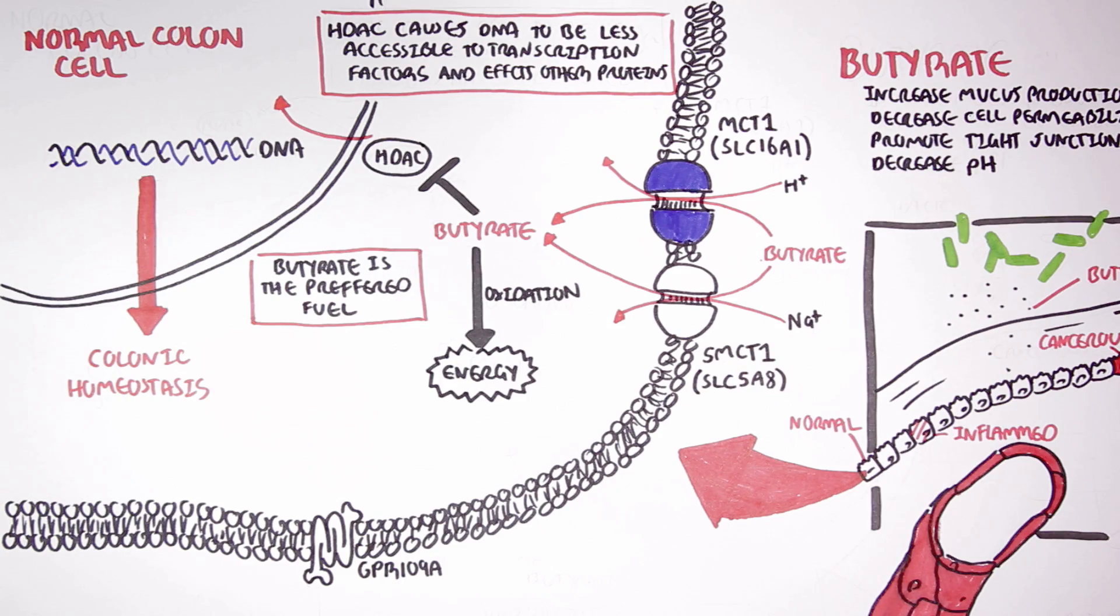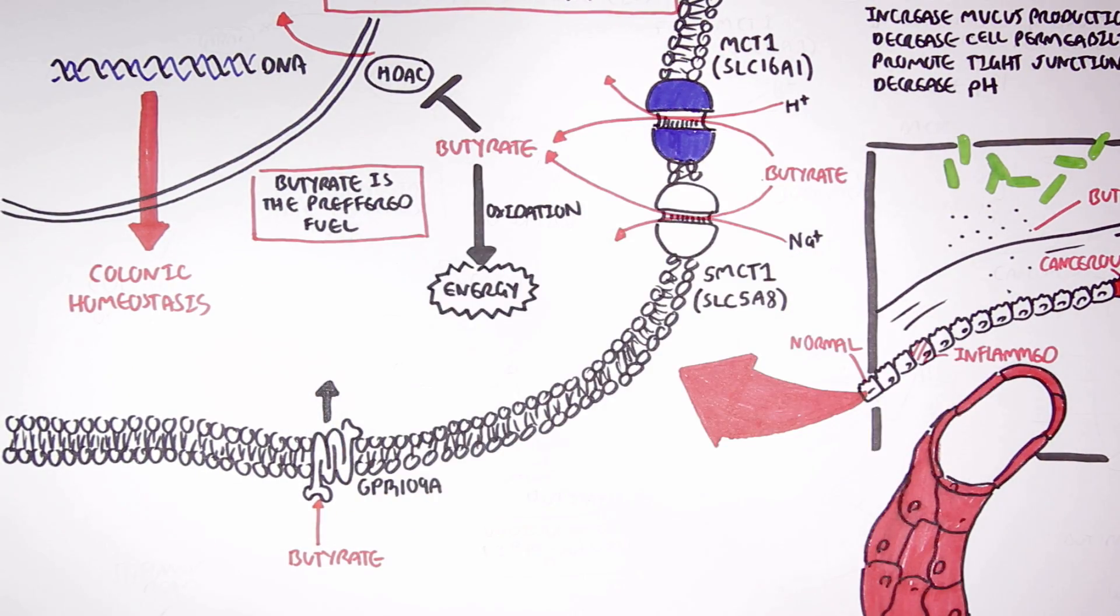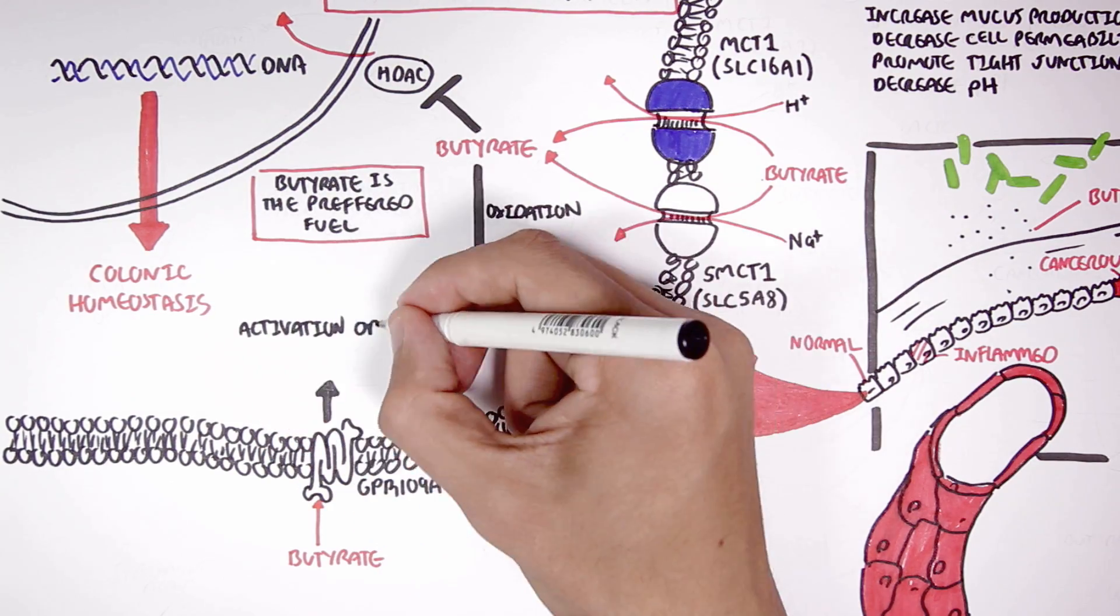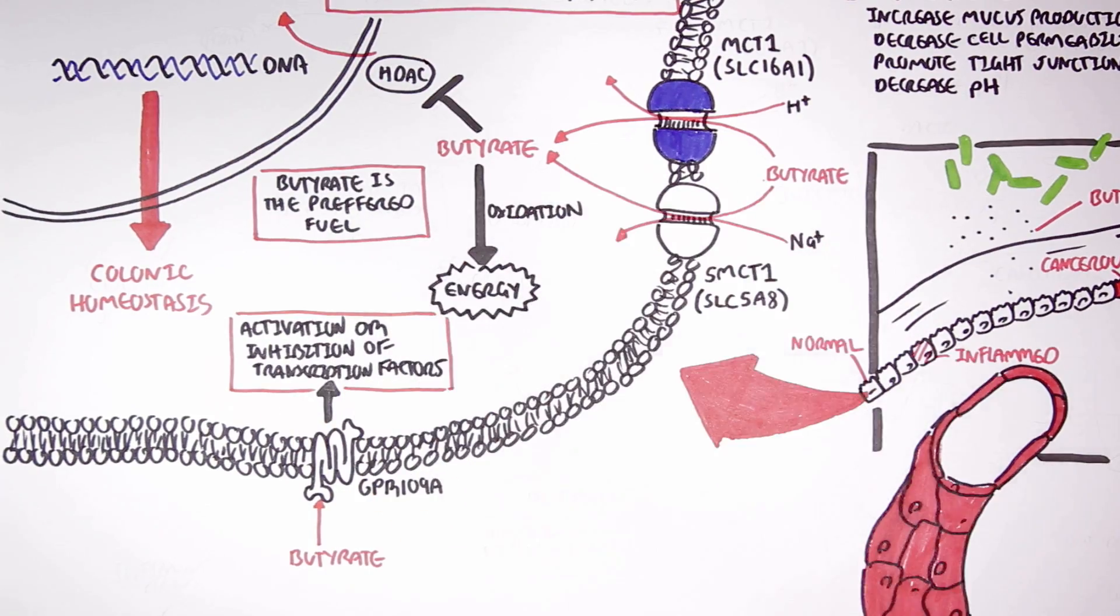Butyrate can also bind onto the G-protein receptor 109A, which can cause activation or inhibition of certain transcription factors. And we will look into this as we move through the video.